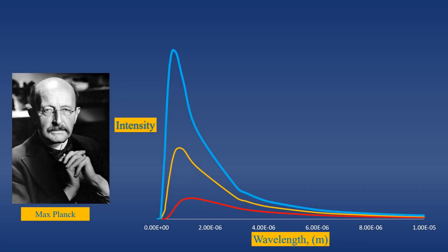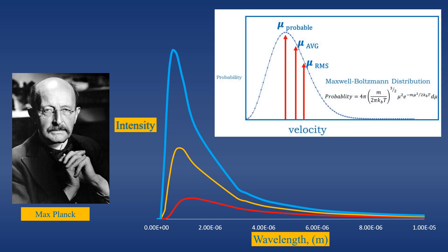Max Planck, who studied thermodynamics, approached this curious experimental data from a thermodynamics point of view. See, these experimental curves look very similar to the distribution of particle velocities from kinetic molecular theory. Here is a figure from my kinetic molecular theory lecture. The key to recreating a distribution plot like this is the e to the x term.